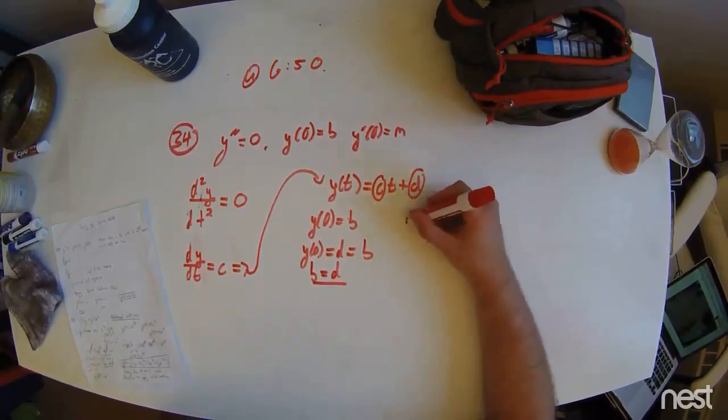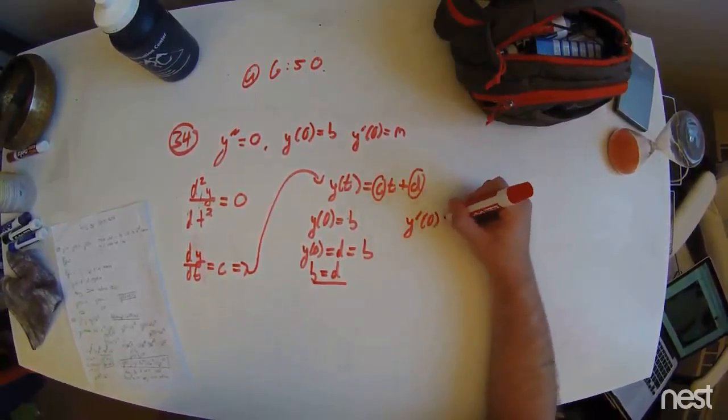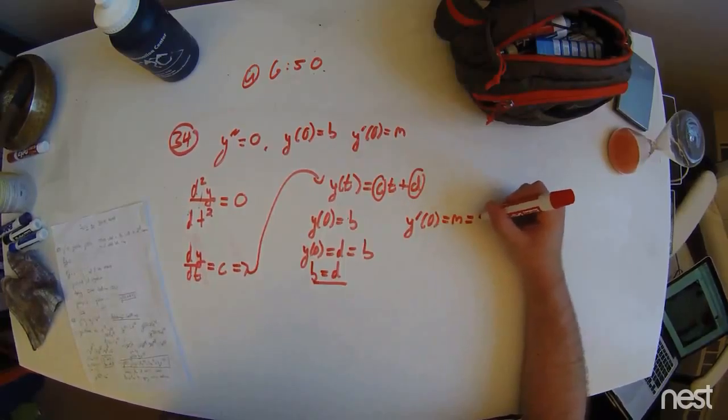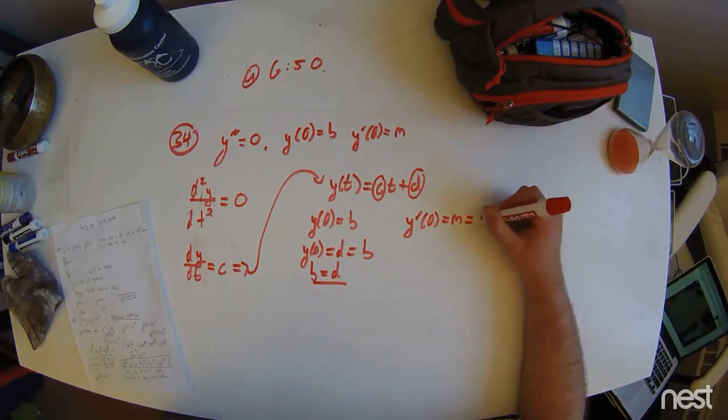Finally, the second initial condition, y prime of zero equals m, which equals c.